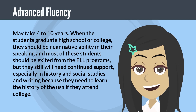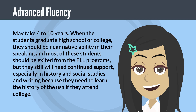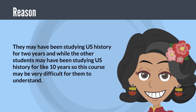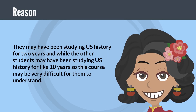Advanced fluency may take 4 to 10 years. When students graduate high school or college, they should be near native ability in their speaking, and most should be exited from ELL programs — but they still will need continued support, especially in history, social studies, and writing, because they need to learn the history of the USA if they attend college. They may have been studying US history for only 2 years, while other students have been studying it for 10 years, so this can be very difficult for them.